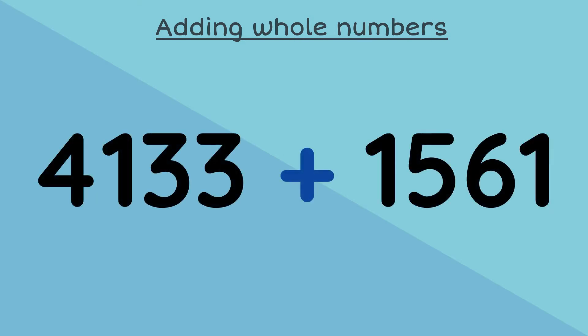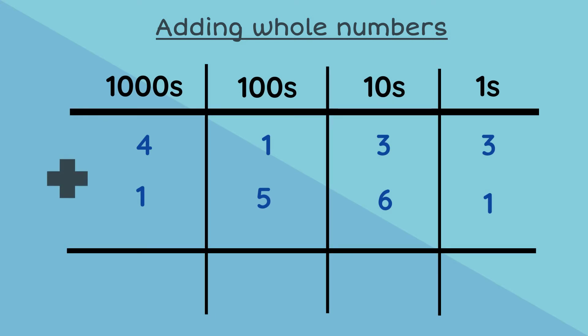Let's look at an example without regrouping. 4133 plus 1561. We place our number sentence into the place value chart and then we begin to add from our ones column going up.